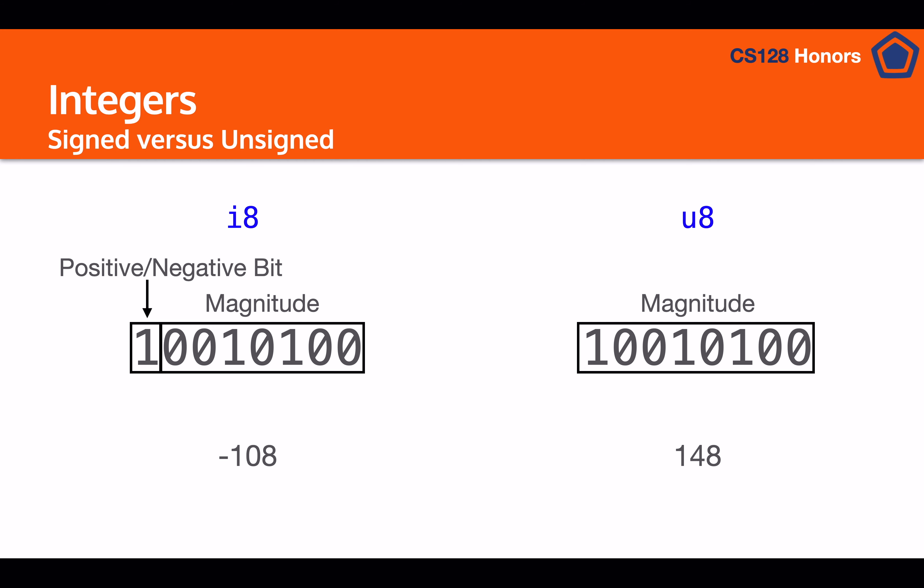So this is really useful if, say, you have something like the size of an array, you can use an unsigned integer as opposed to a signed integer because that way you're able to store it for twice as large of an array.